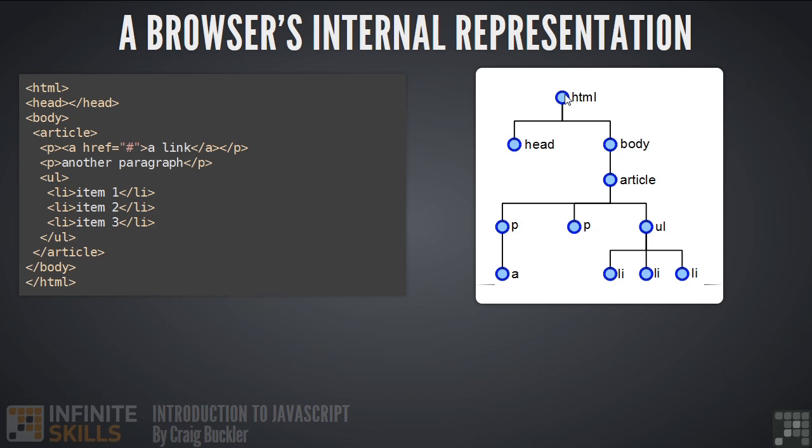If you look at an individual node, let's say the unordered list, we can access its parent, which is the article, and work our way up through the tree to the grandparents and the great-grandparent. We can also access its siblings—these are nodes with the same parent, so these two paragraph tags. And finally we can access its children, the nodes which have our UL element as a parent. In this case, it's the list elements: one, two, and three.